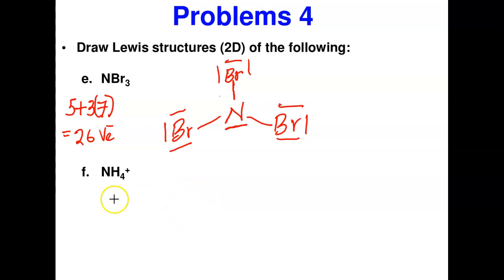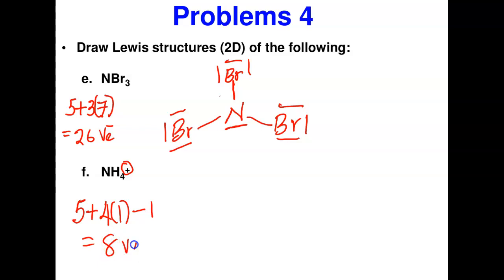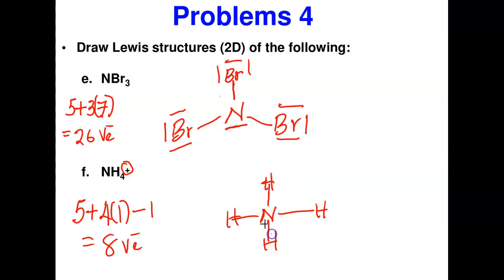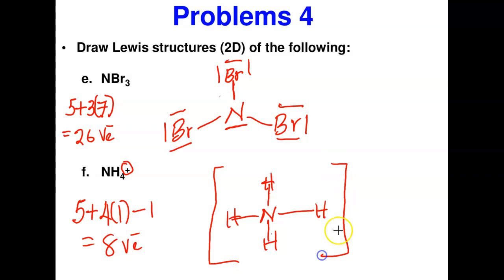For the ammonium ion NH4+: nitrogen is in group five, five electrons, plus four hydrogen atoms times one is four. The plus charge means we subtract one: nine minus one gives eight valence electrons. Nitrogen is the central atom surrounded by four hydrogen atoms. Connect all four hydrogen atoms to nitrogen with single bonds — that uses all eight electrons. Since this is a charged ion, indicate the charge with a square bracket and put the charge as a superscript.